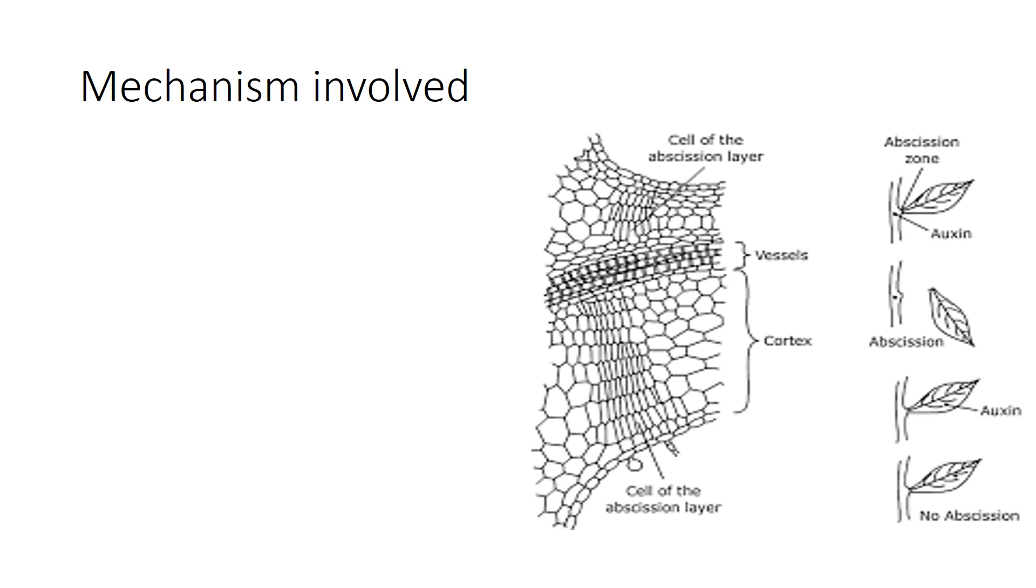We will understand the detailed mechanism involved in this process. So here you can see this diagram. This is representative of the adjoining areas of the stem. This is the stem portion and this is the leaf portion.